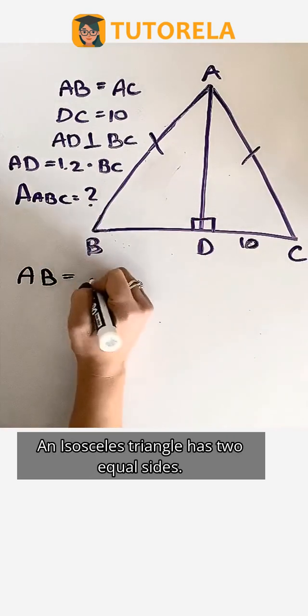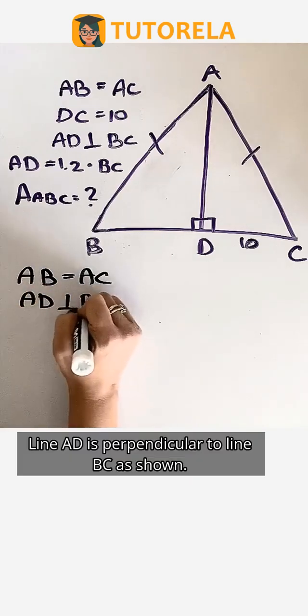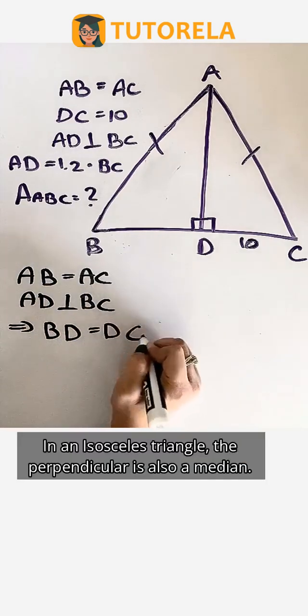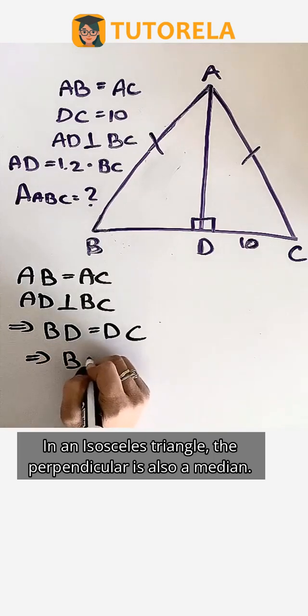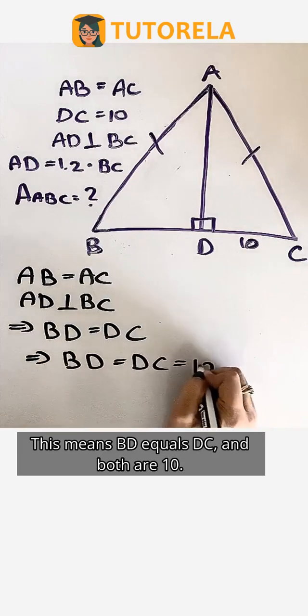An isosceles triangle has two equal sides. Line AD is perpendicular to line BC as shown. In an isosceles triangle, the perpendicular is also a median. This means BD equals DC and both are 10.